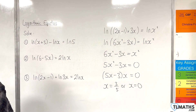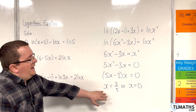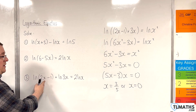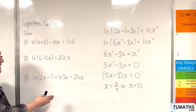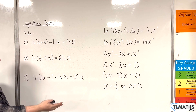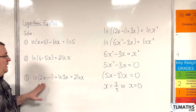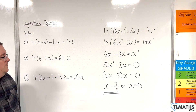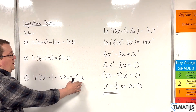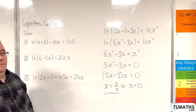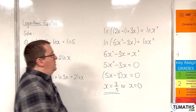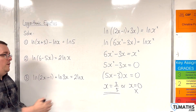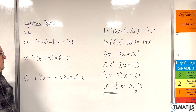We need to check whether both solutions work. x equals 3 fifths works: 2 times 3 fifths is 6 fifths, take away 1 is positive, so that's all good. However, x equals 0 does not work — the natural log of 0 is undefined — so that is not a solution. Therefore x equals 3 fifths is the only solution to number 3.